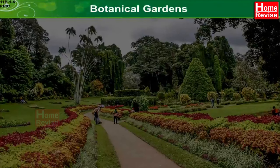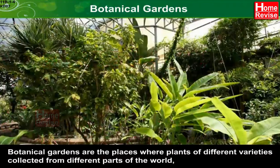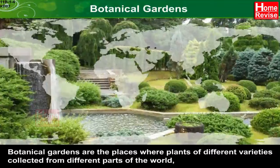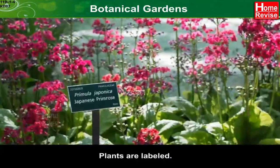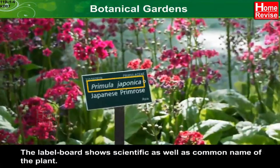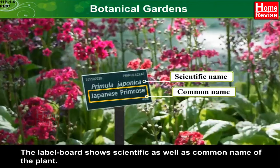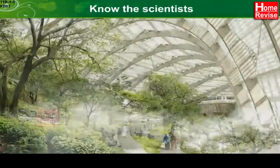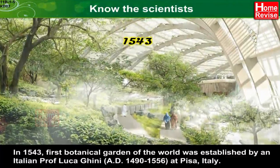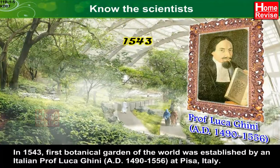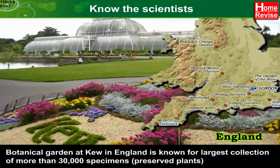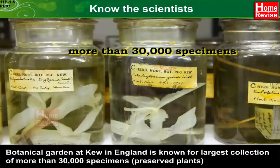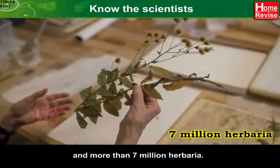Botanical Gardens are places where plants of different varieties collected from different parts of the world are grown in a scientific and systematic, in-vivo manner. Plants are labelled, and the labelled board shows the scientific as well as common name of the plant. In 1543, the first botanical garden of the world was established by Italian professor Luca Gini (A.D. 1490–1556) at Pisa, Italy. The botanical garden at Kew in England is known for the largest collection of more than 30,000 specimens of preserved plants and more than 7 million herbaria.